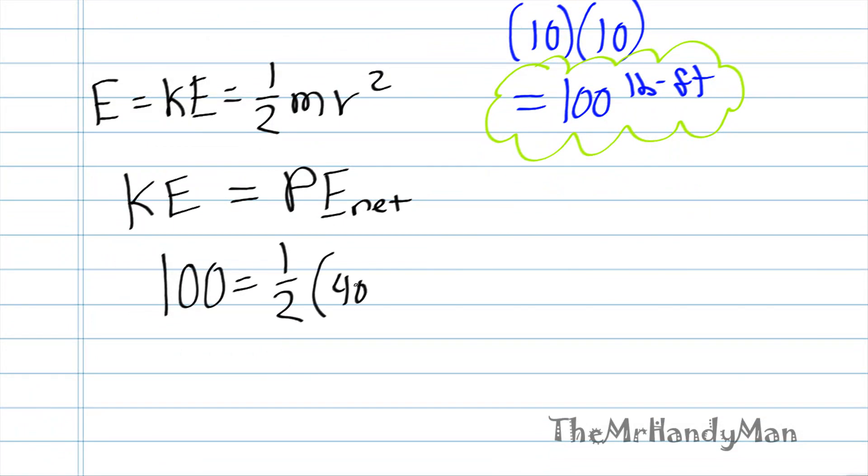that will be 40 plus 50 V squared. And when you solve and you put this all through, you're going to get V will equal 8.46 feet per second.